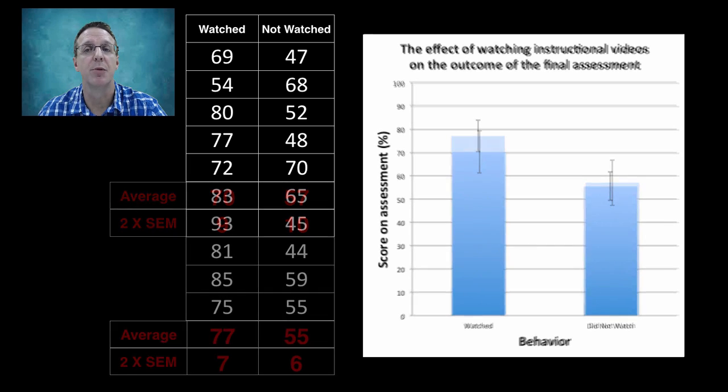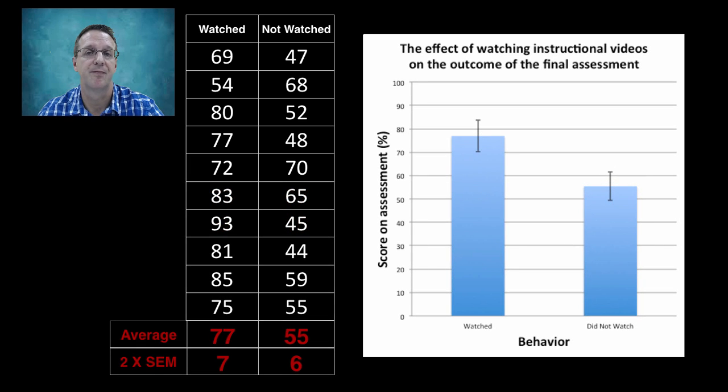What happens if you double the number of samples in each population? Well, now the mean seems to have changed a bit, but again, the SEM error bars have gotten smaller yet again. So, now what's your conclusion?